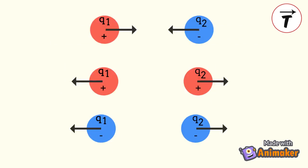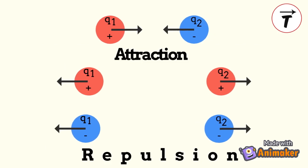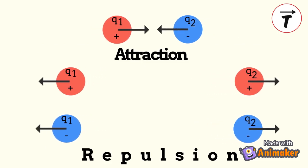The old saying that opposites attract also applies to electric charges. Two objects of the same sign of charge repel and two of opposite sign of charge attract.